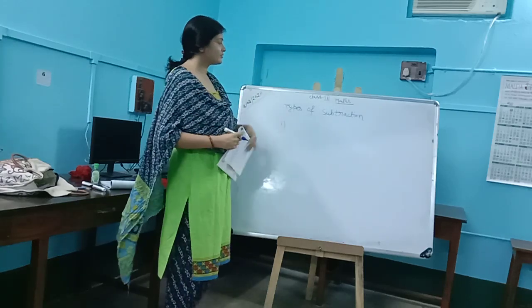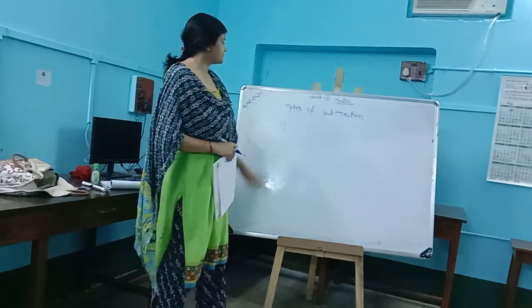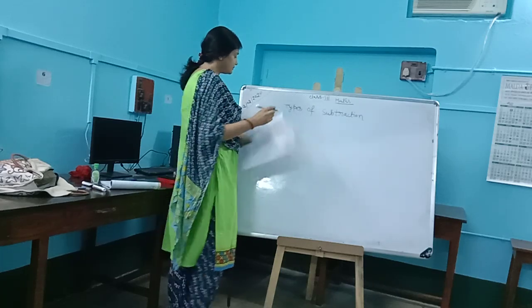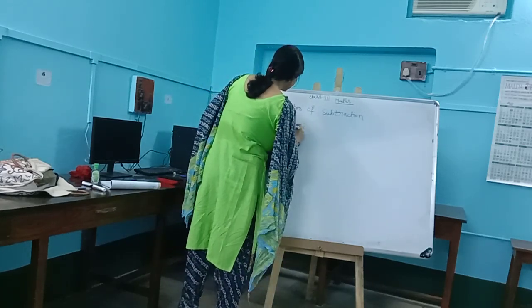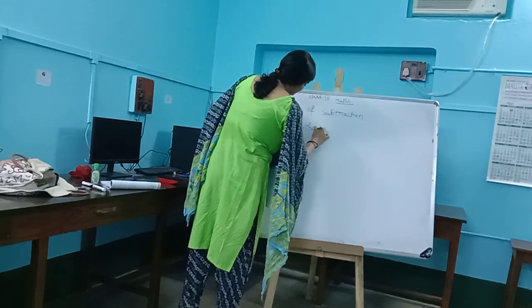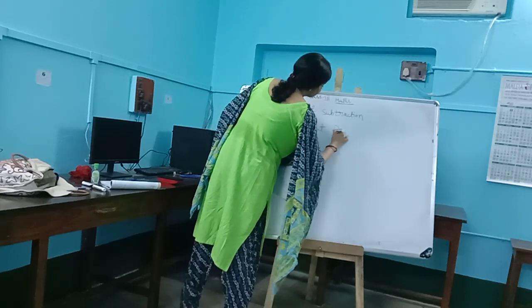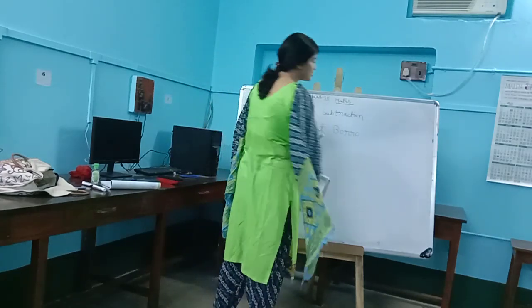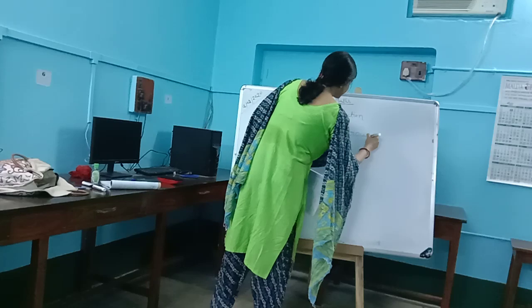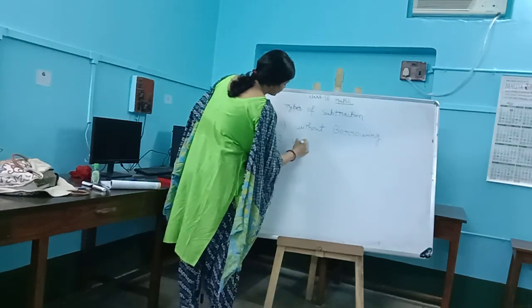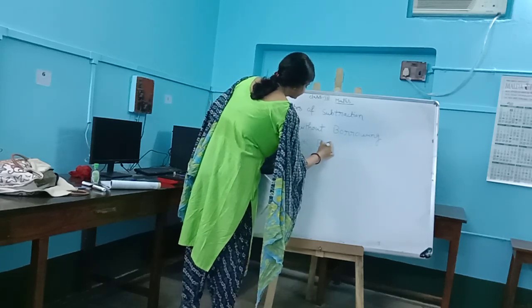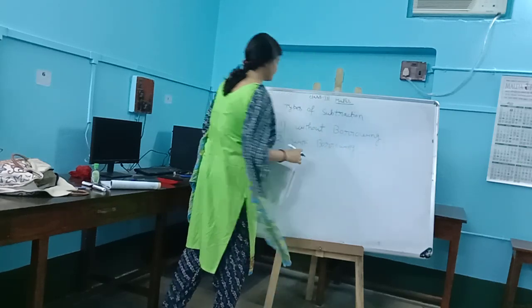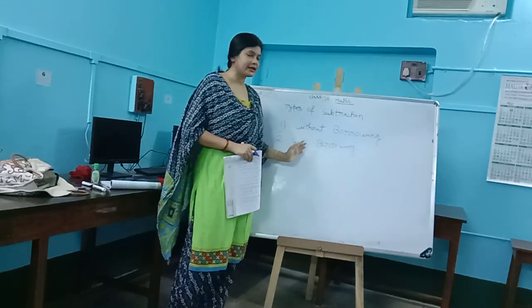Number 1: with borrowing, and number 2: without borrowing. Without borrowing means simple subtraction — you only do the straightforward subtraction. And the second one is with borrowing, which means the subtraction where you have to carry from another column. So you have two types: without borrowing and with borrowing.